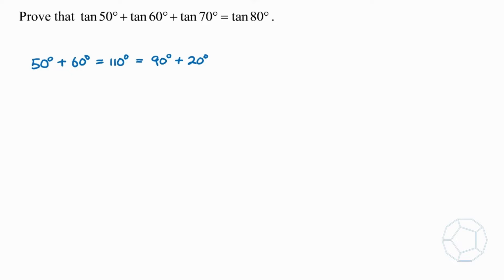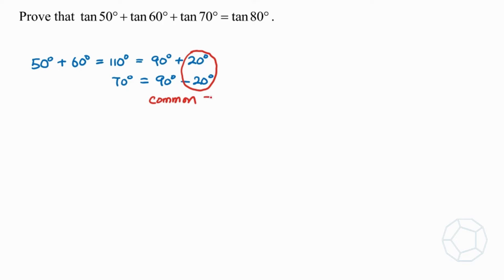On the other hand, for the remaining term on the left hand side, 70 degrees, it is equal to 90 degrees minus 20 degrees. Now we can see that there's a common term 20 degrees. So based on these two forms, we'll recall some trigonometric formulas.